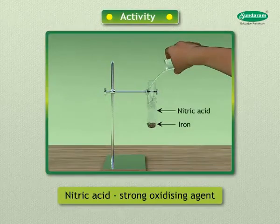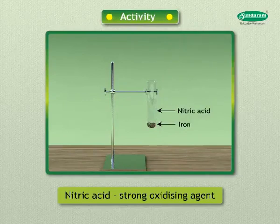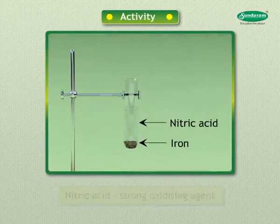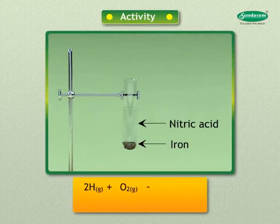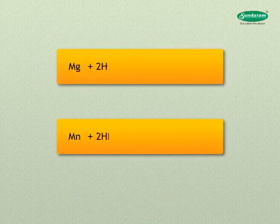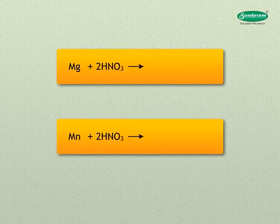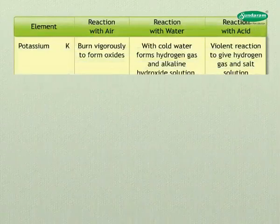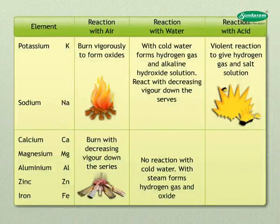Hydrogen gas is not evolved when a metal reacts with nitric acid, because it is a strong oxidizing agent — it oxidizes the hydrogen produced to water and itself gets reduced to nitrogen oxides: N₂O, NO, or NO₂. However, magnesium and manganese react with dilute HNO₃ to evolve hydrogen gas. This table summarizes the reactions of metals with air, water, and acids.